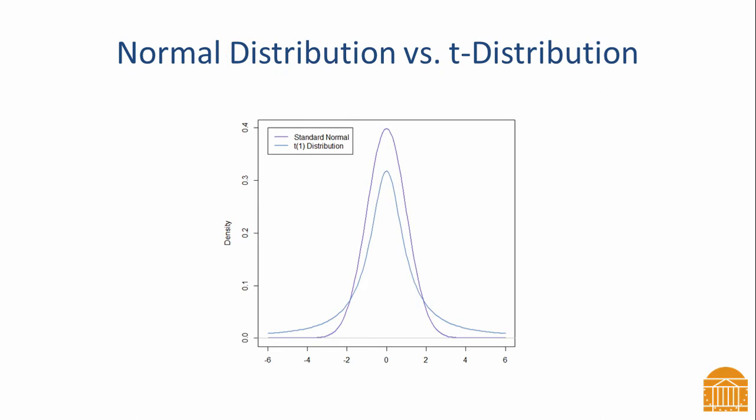The t-distribution is actually a family of distributions with each member defined by its degrees of freedom. A one-sample t-test has n minus 1 degrees of freedom, where n is the sample size. A t-distribution has a mean of 0 when the degrees of freedom is larger than 1, and it has a variance that approaches 1 as the degrees of freedom increases.